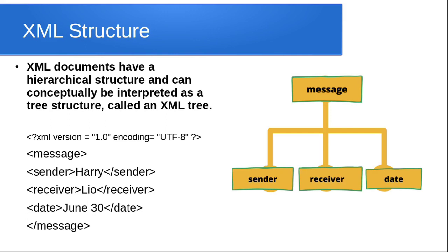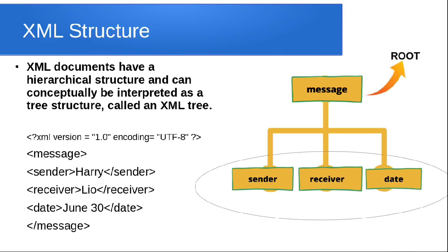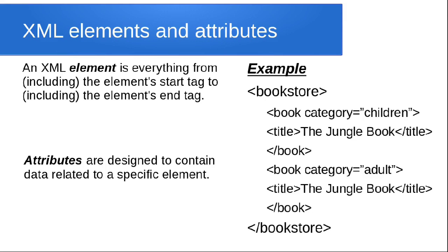The data values are Harry, Leo, and June 30. Looking at the right section, you can see 'message' is the root and 'sender', 'receiver', and 'date' are the children. That is the hierarchical structure of XML.